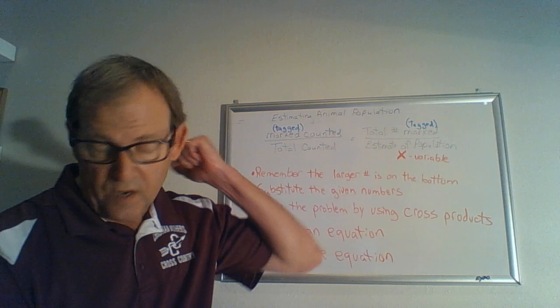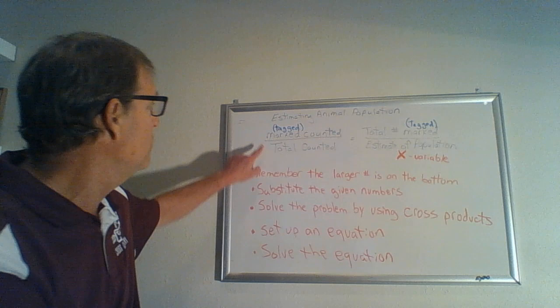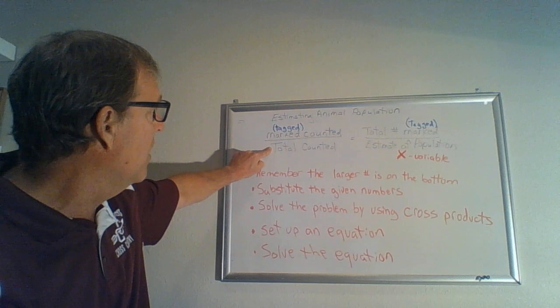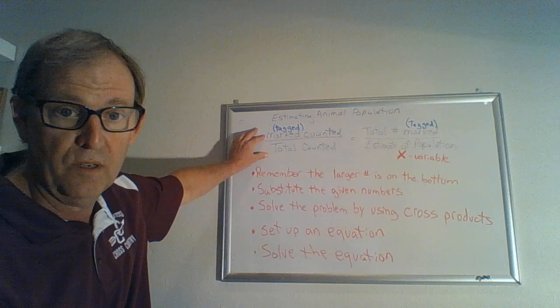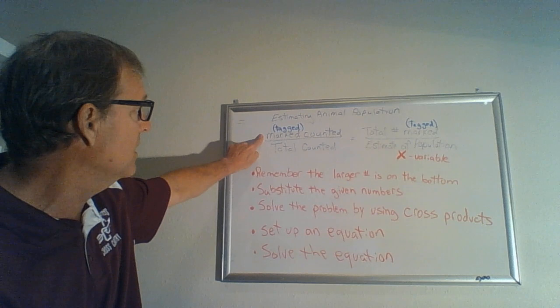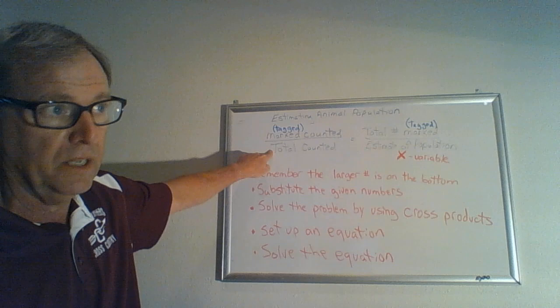So I put an example up here of estimating animal population, and I put these two categories: marked, counted. Another word for mark, they use the word tagged. And so if you write it down like this and then just kind of fill in the blanks, I think it'll make it a lot easier for you. So you have marked counted and you have the total counted. So there's a difference between what was marked or tagged and counted and what was the total counted, because not all the animals are going to be tagged.